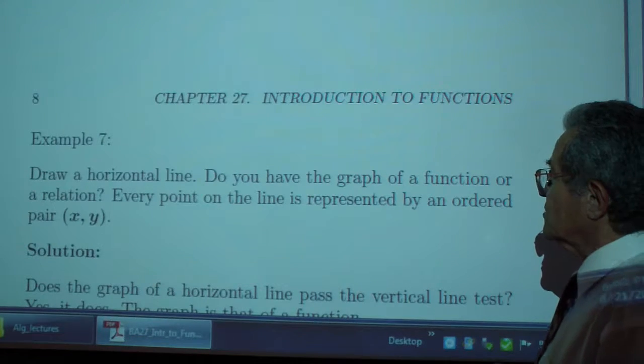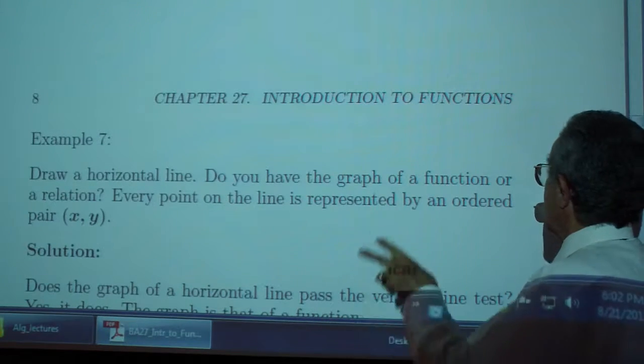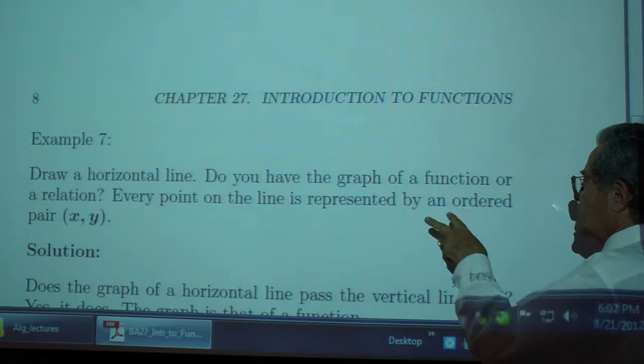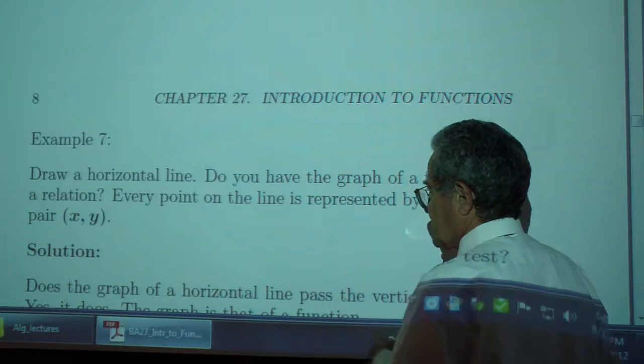Example 7. Draw a horizontal line. Do you have the graph of a function or a relation? Every point on the line is represented by an ordered pair x, y.